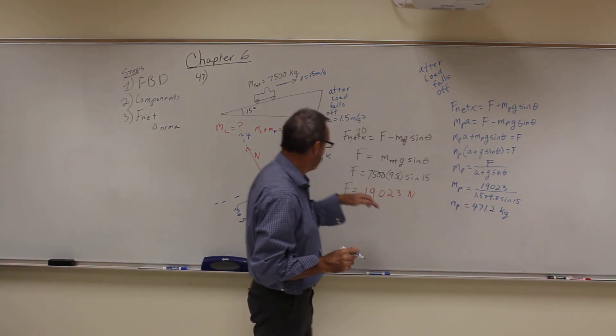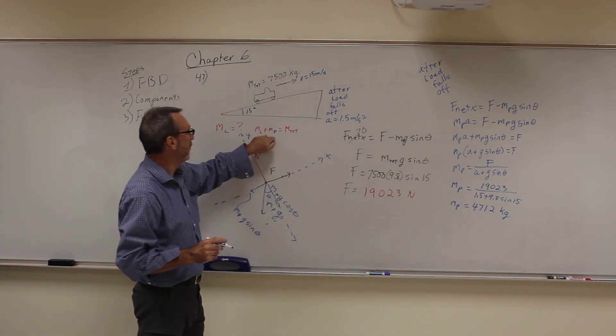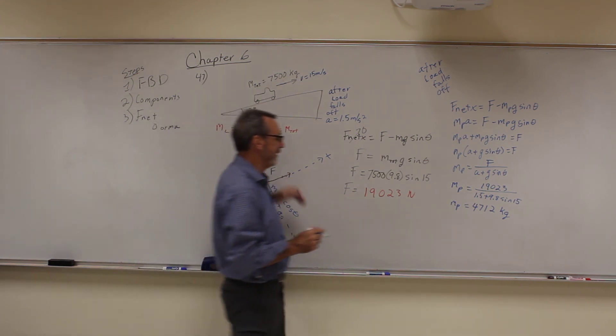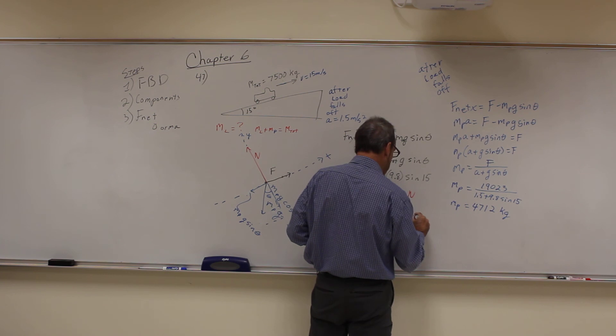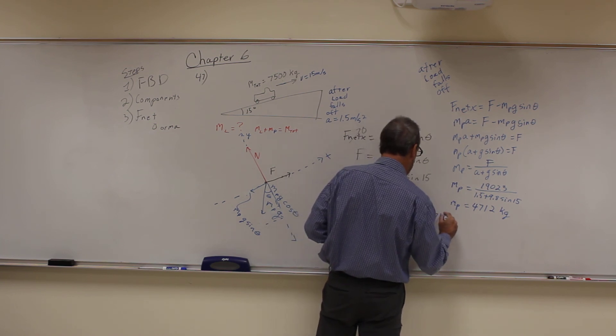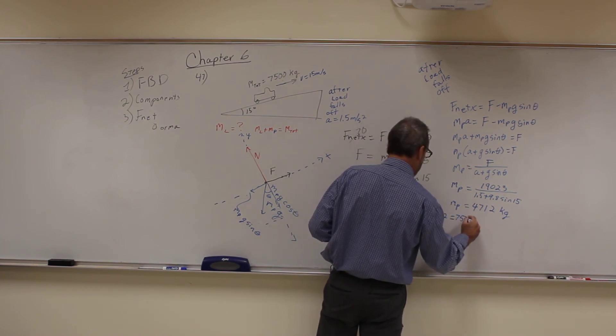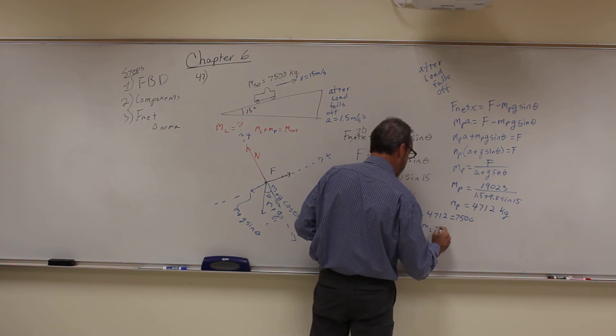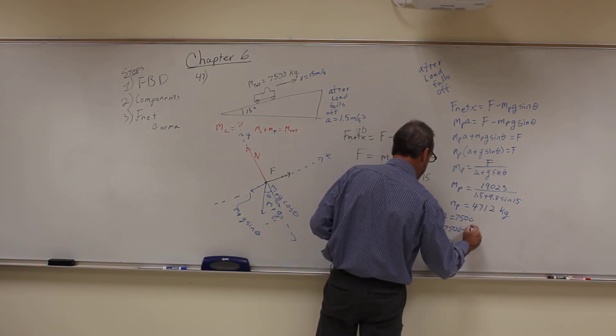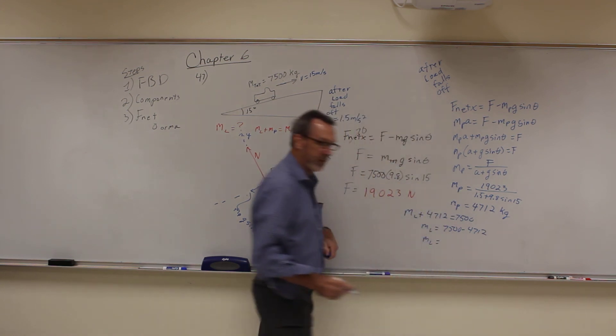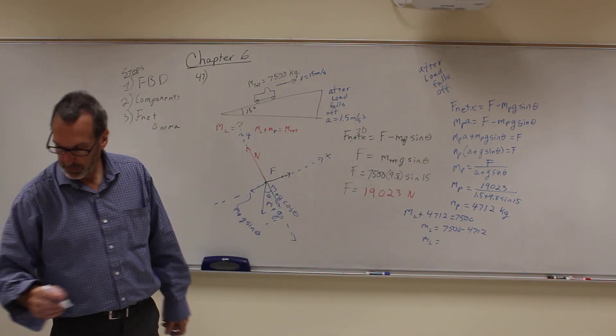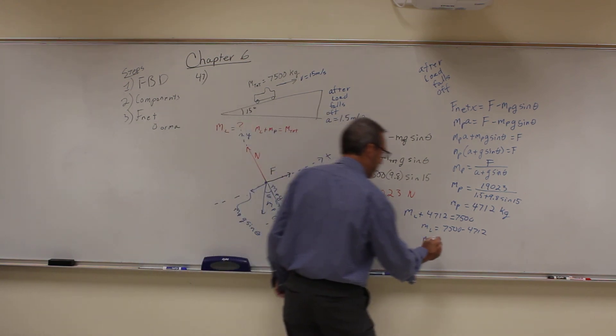But they didn't ask for that, they want the mass of the load. But we know we add those two together equals 7,500. So I can say the mass of the load plus 4,712 is equal to 7,500. So the mass of the load is just equal to 7,500 minus 4,712. The mass of the load is equal to 2,800 kilograms with two sig figs.